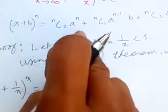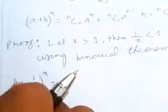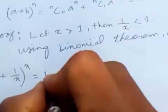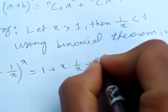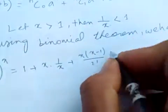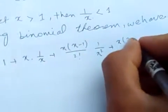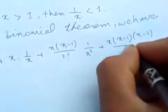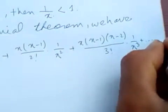Applying the formula, here n is x, a is 1, and b is 1/x. So the expansion gives: 1 plus x times (1/x), plus x(x−1) over 2 factorial times (1/x)², plus x(x−1)(x−2) over 3 factorial times (1/x)³, and so on.